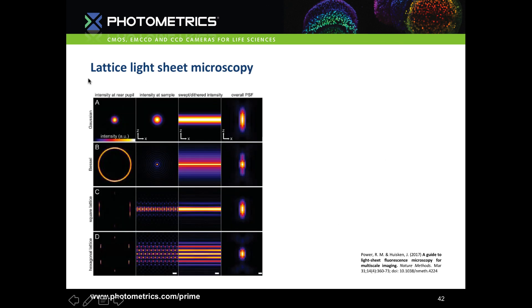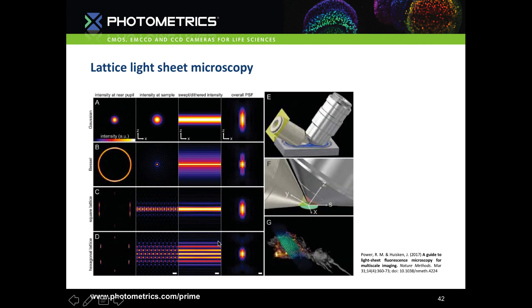Bessel beams have made possible the last type of lightsheet: lattice lightsheet, developed by the Betzig lab. It combines Bessel beam illumination with structured illumination microscopy by creating a patterned Bessel beam — shooting the beam through a grid to create many little Bessel beams producing multiple thin lightsheets. This gives a two-fold increase in resolution like in SIM but highly parallelised, making the system incredibly fast with speeds of up to 1000 frames per second. It's a very complex system but unmatched in resolution and speed.